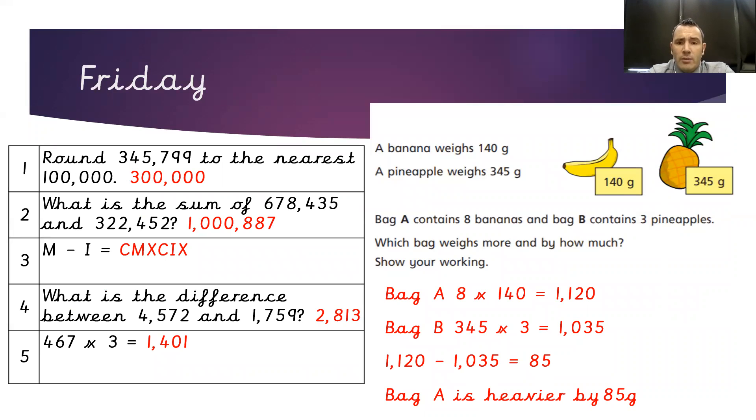Bag B, we would have 345 grams times 3, which would give us 1,035 grams or 1.035 kilograms.